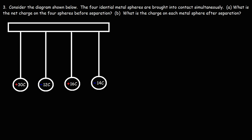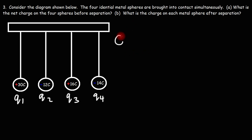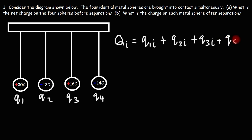Consider the diagram shown below. Four identical metal spheres are brought into contact simultaneously. What is the net charge on the four spheres? Let's call them Q1, Q2, Q3, and Q4. We want to find Q initial, the total charge, which is Q1 initial plus Q2 initial plus Q3 initial plus Q4 initial.